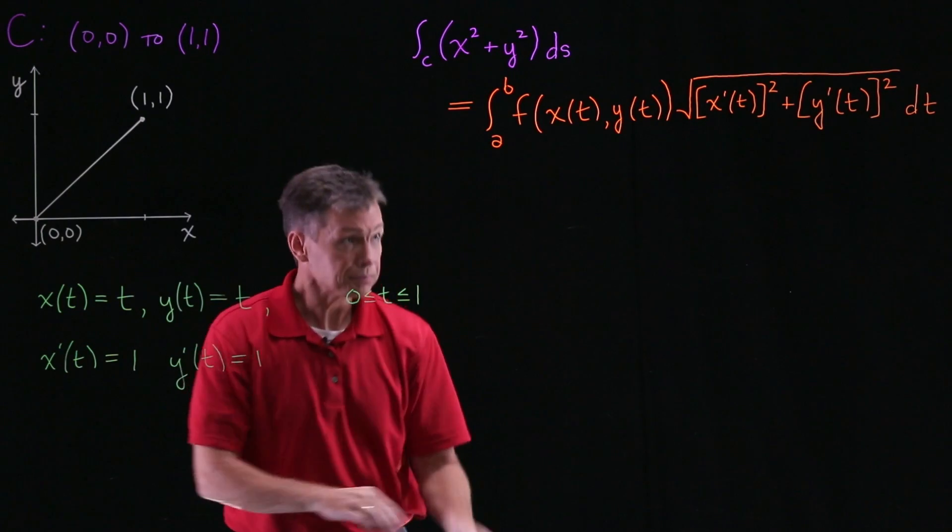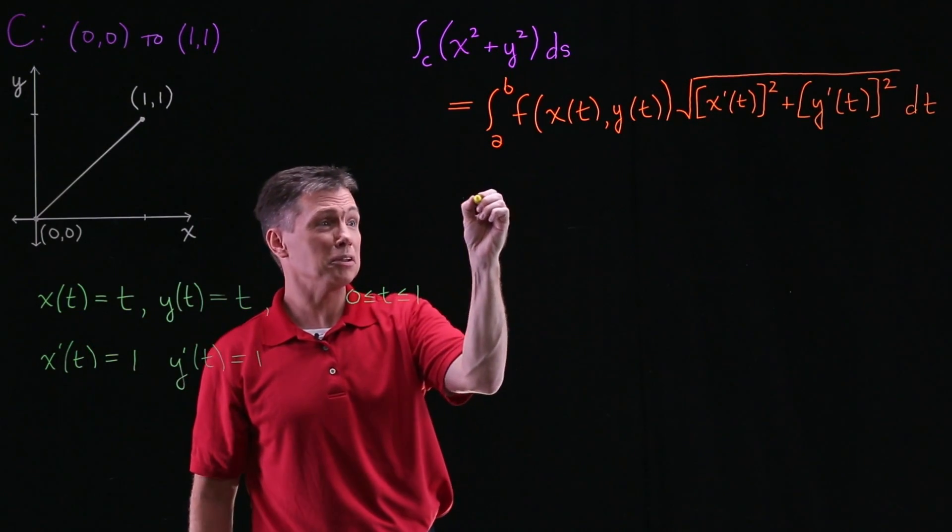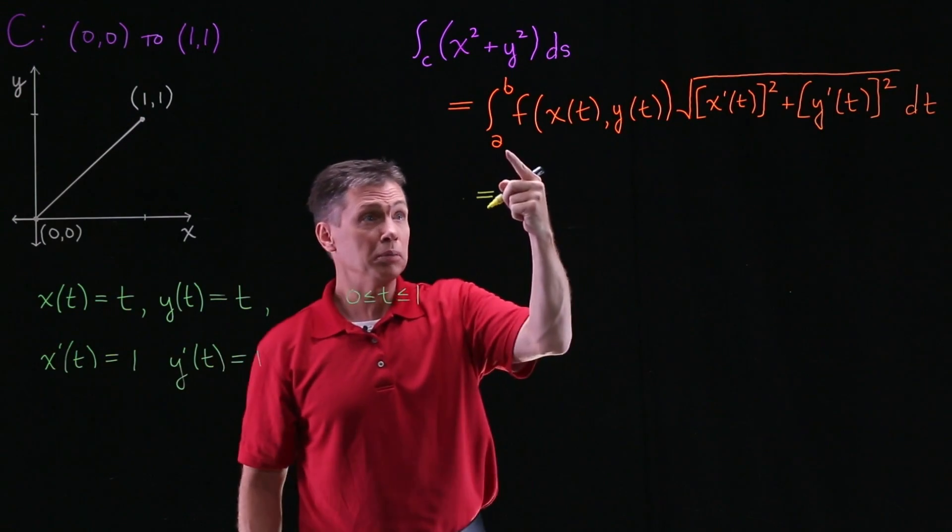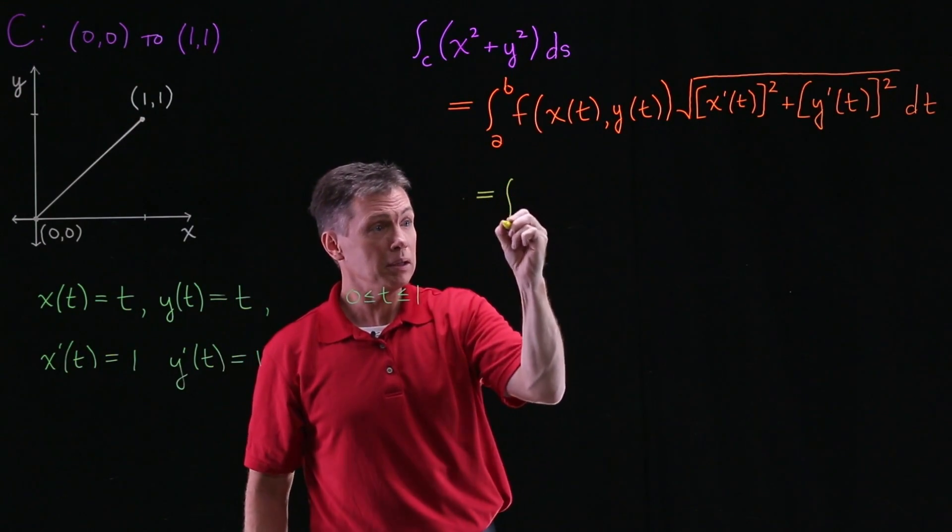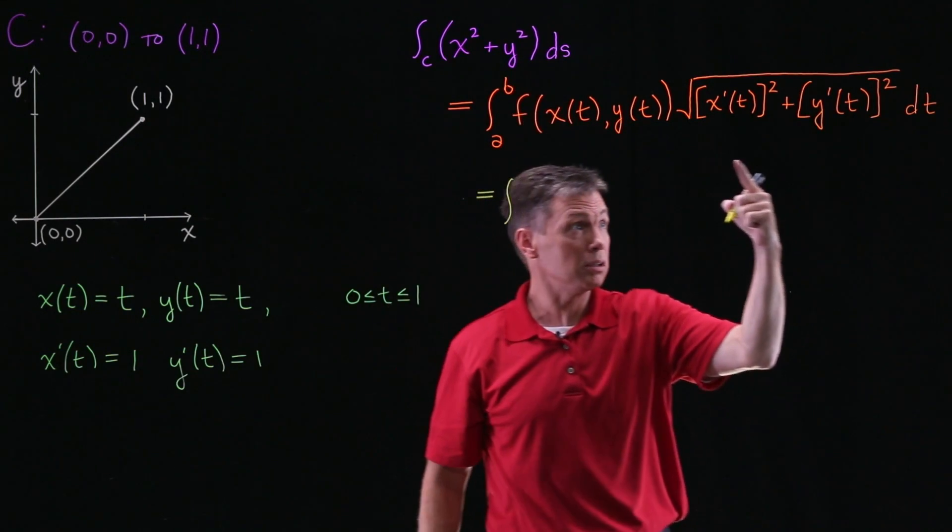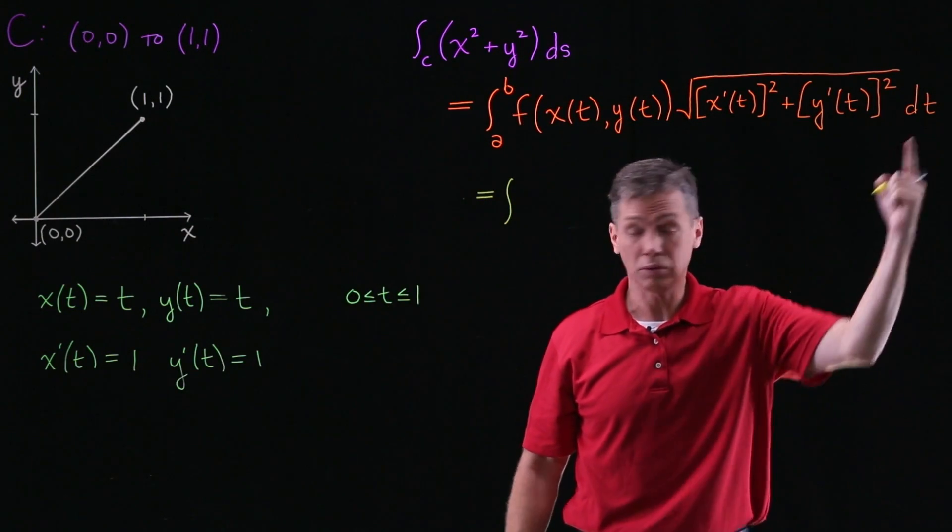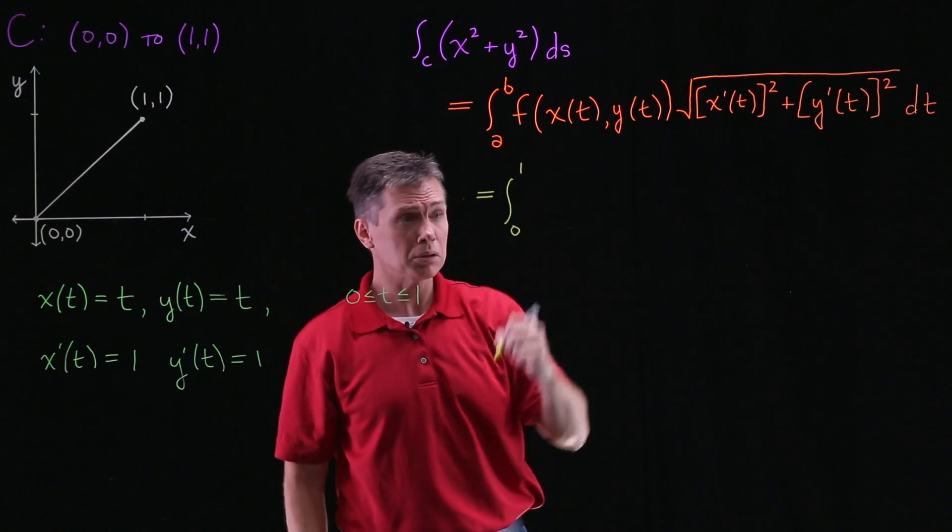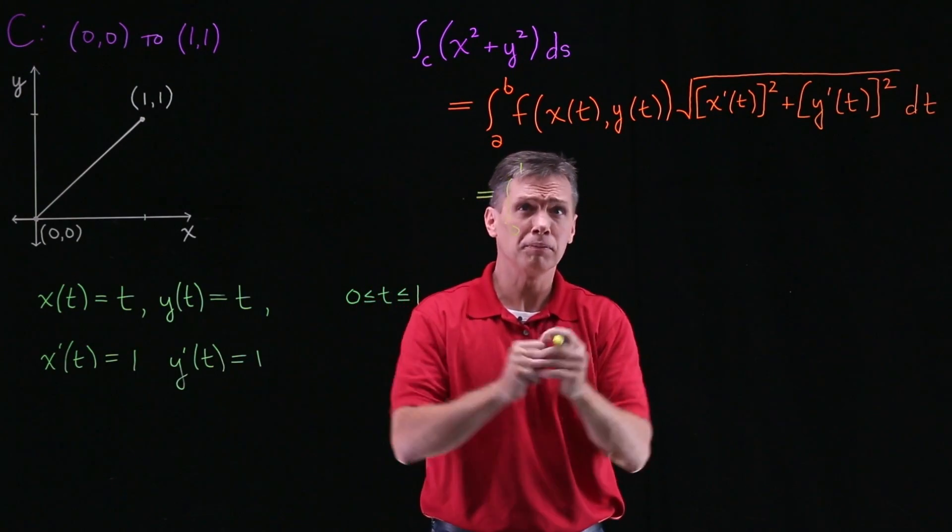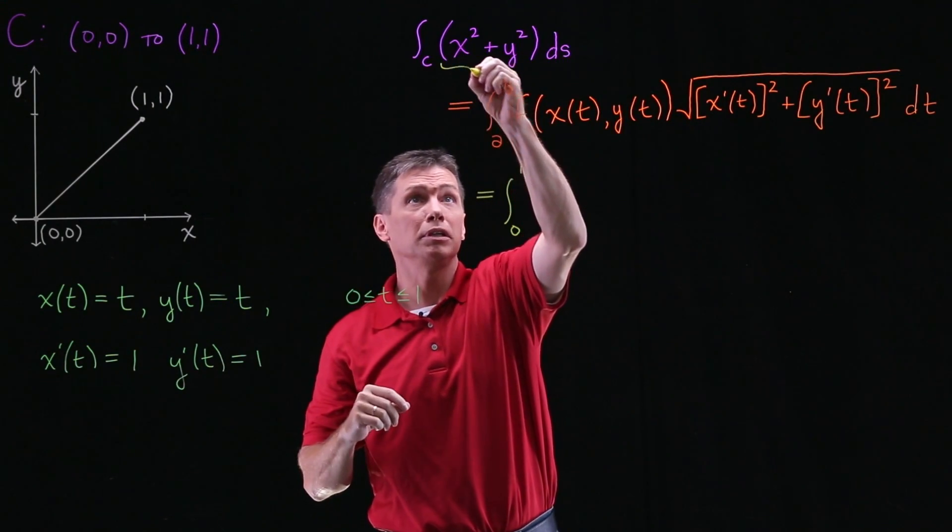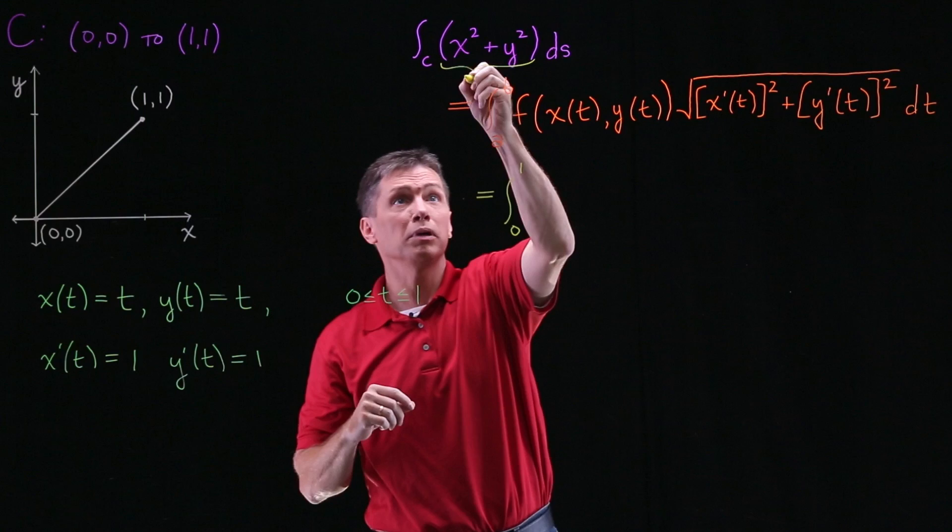Now I move back over here. Switch colors maybe even because now I'm going to plug some specifics into this formula. My integral from a to b. A to b, those limits of integration are your t values. So t goes from 0 to 1. I'll make my integral go from 0 to 1. The f of, here's your f right here. Okay. This is my f.